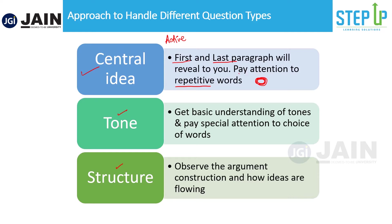Tone is nothing but the choice of words the author is using — it tells you the attitude of the author. To distinguish tones, there are three basic types: a positive tone, where the author has a positive overall attitude; a neutral tone; and a negative tone. Within each of these there are degrees.